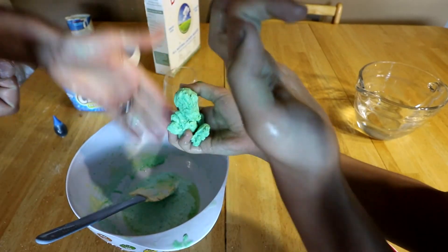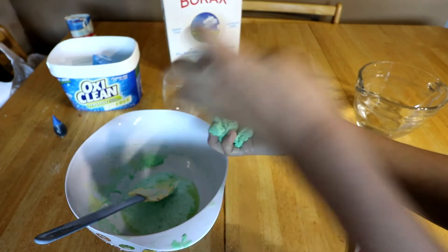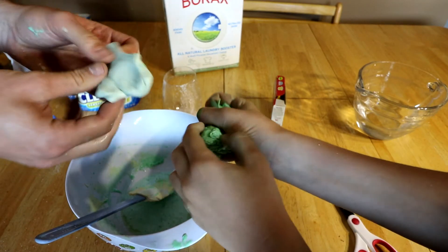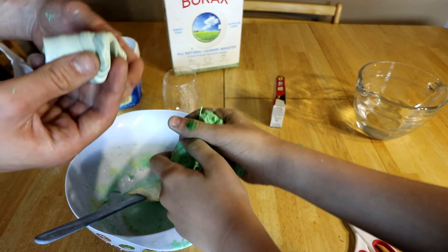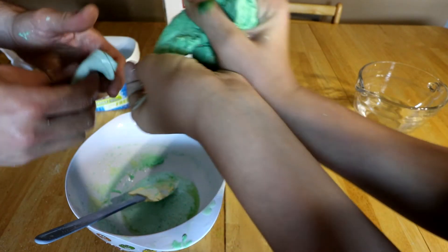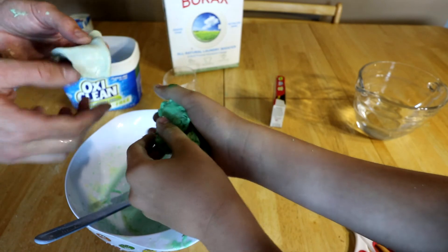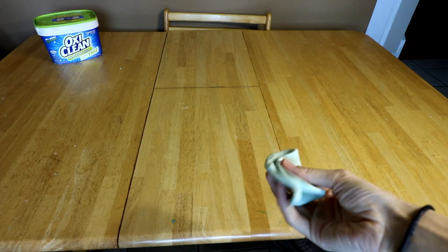It's 50% glue, 50% water, and then like a teaspoon or two of borax, and you have slime. Make sure to color the slime before you add the borax, because once you add the borax it just starts combining. So you want to make sure you have that ahead of time. So the color's better on this one though, don't you think? The color's better on this one? Yeah.